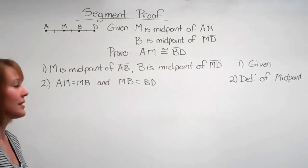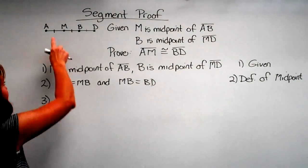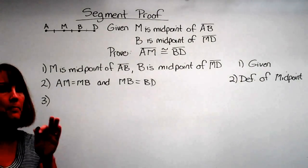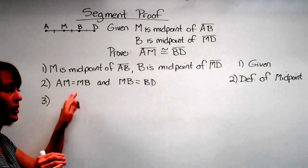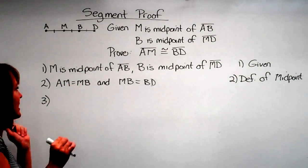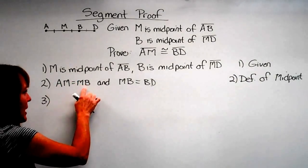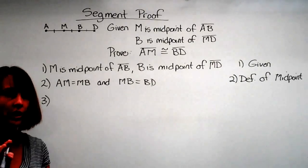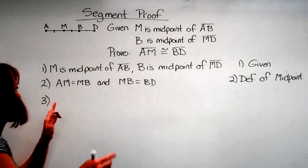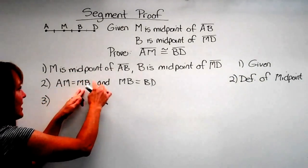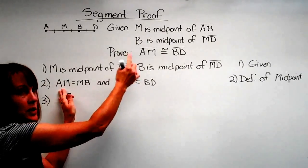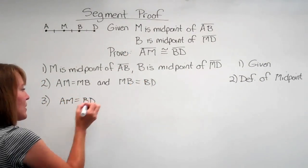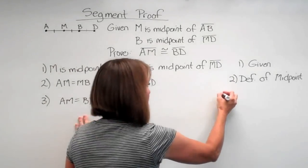Now remember, what are we trying to get to? We're trying to get that these things are congruent. We can see by our tick marks they are, but we have to have a reason to go from here to here. So let's see. We have AM is equal to MB, we have MB equals BD. Wait a minute, that's in the right order. That's our transitive, right? If this equals this and this equals this, then this equals this. We can say AM is equal to BD. Why? That's a transitive property.